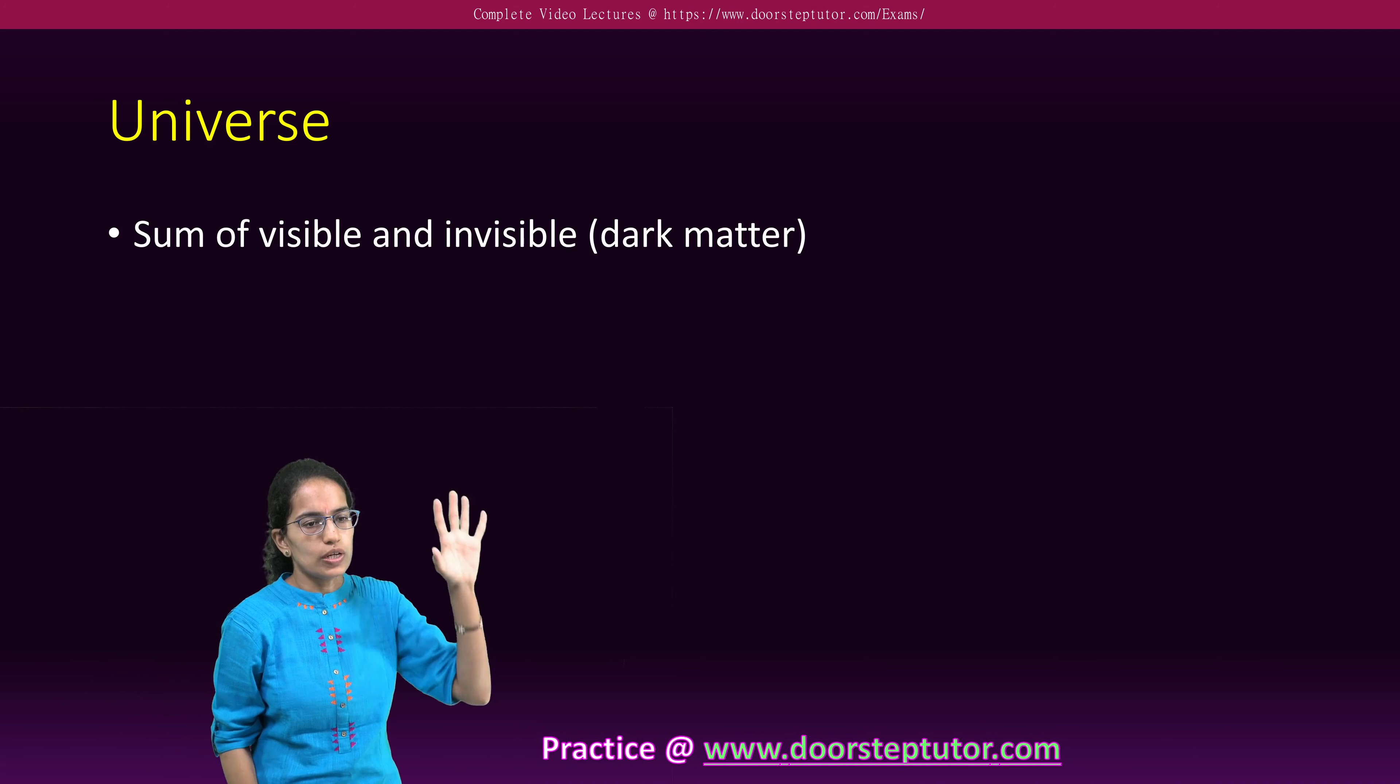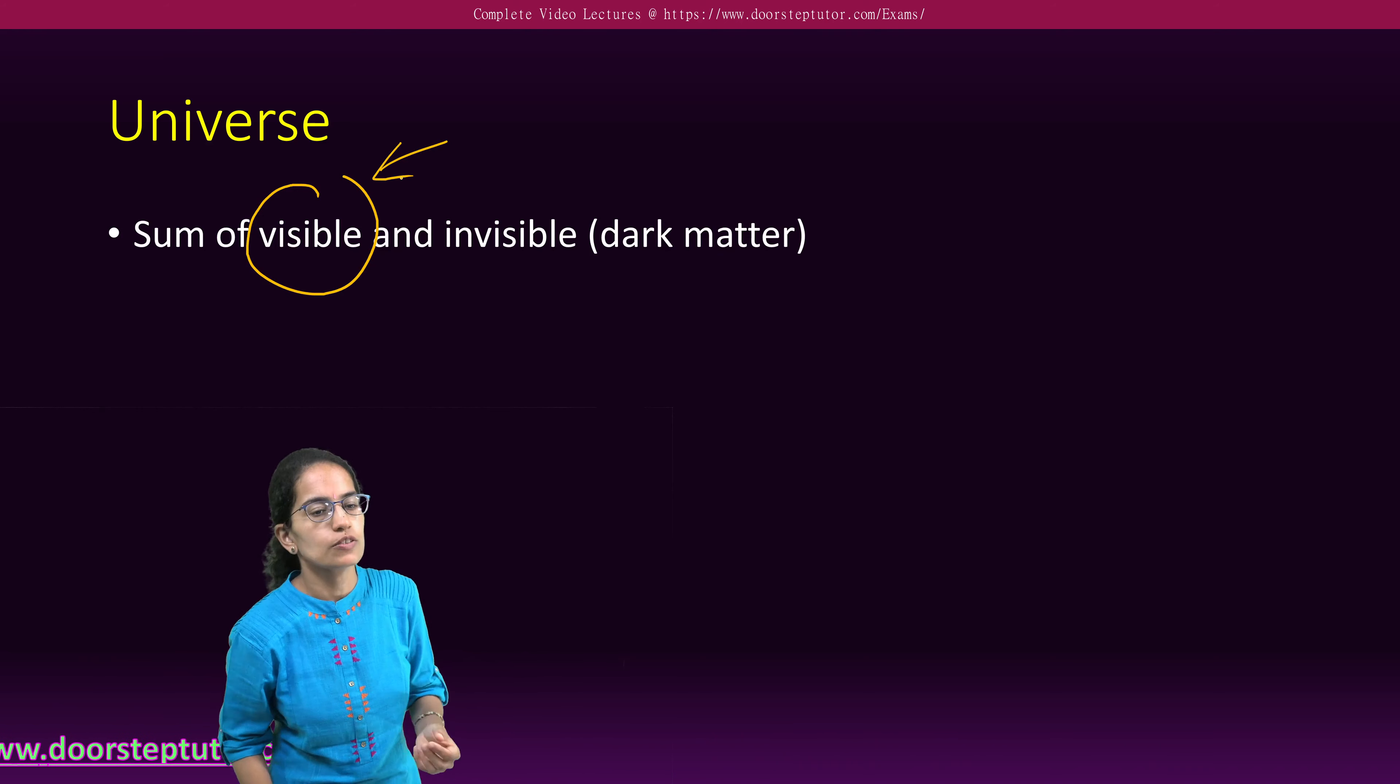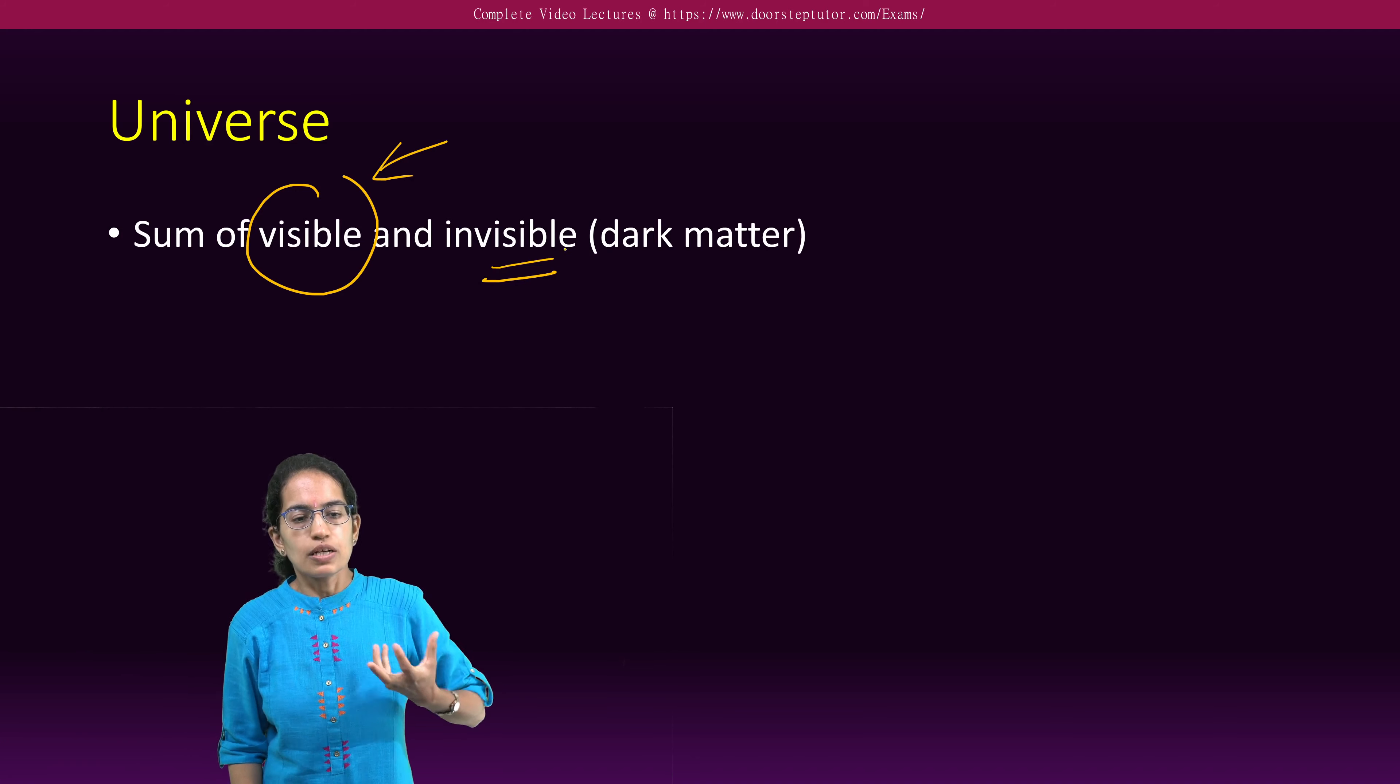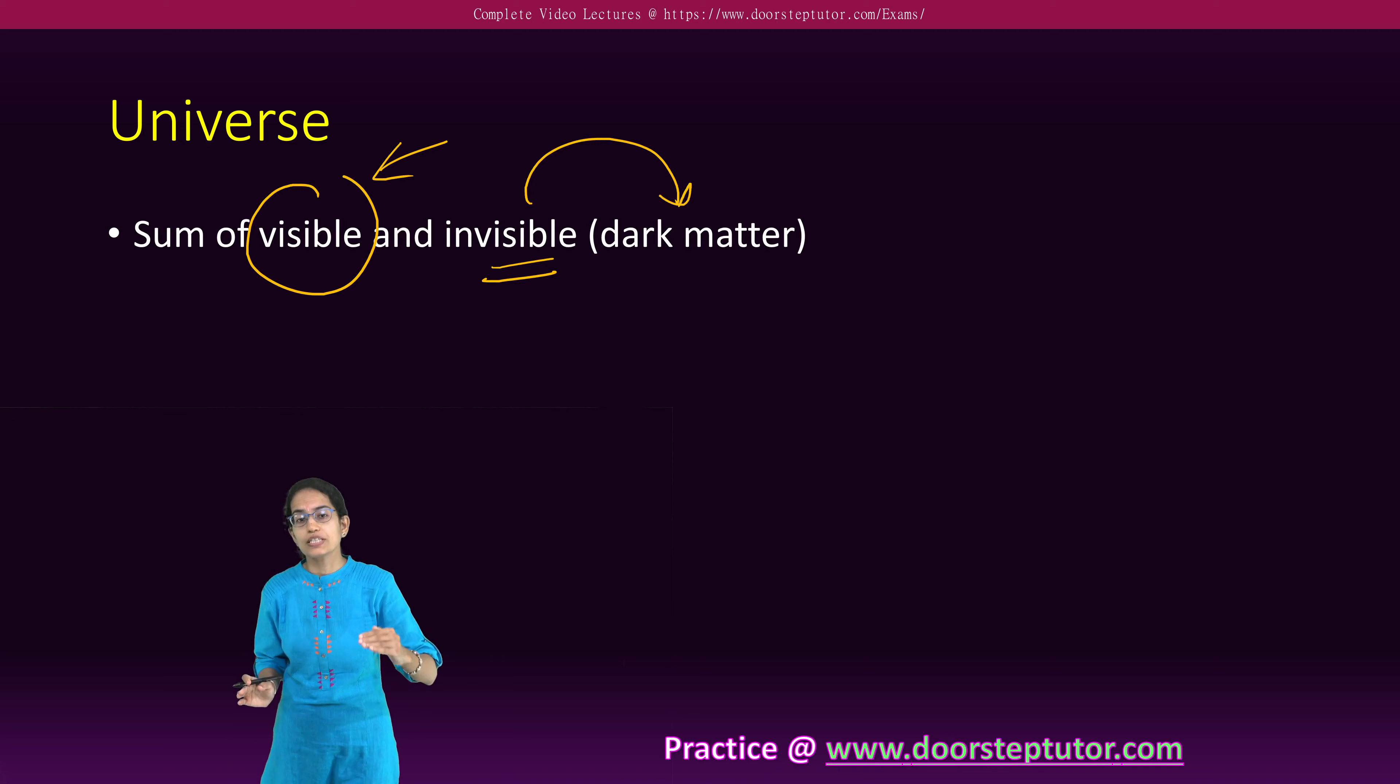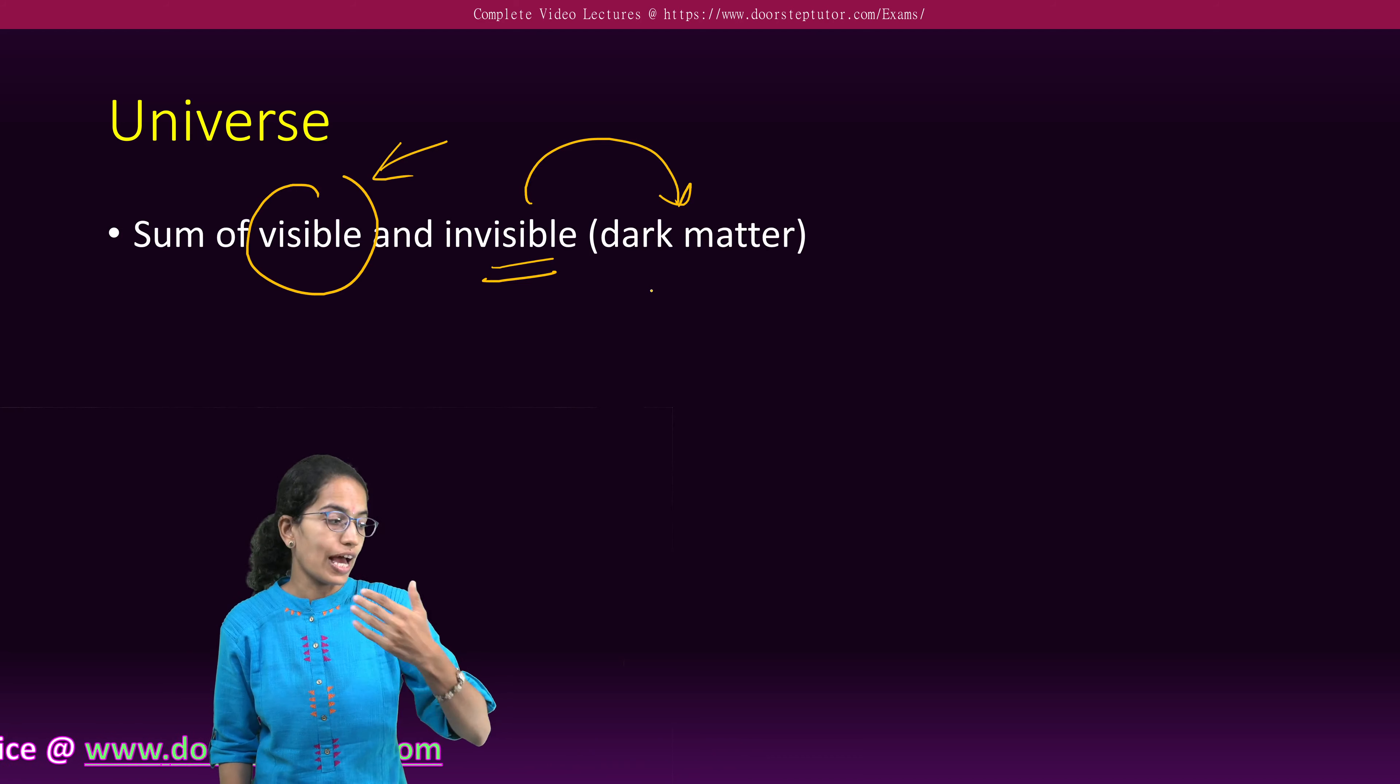Now this universe is a sum total of what is visible to us, which includes the sun, star, moon, constellations, but also the invisible matter. This invisible matter is called dark matter. Note there is a difference between dark matter and dark energy. We'll come to that later in this lecture.